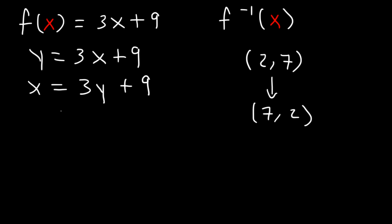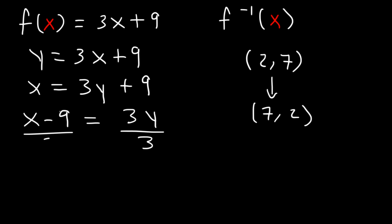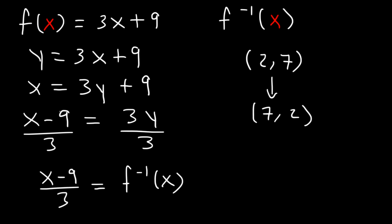Get y by itself. We need to subtract both sides by 9 first. And then to isolate y, we need to divide by 3. So the inverse function is x minus 9 over 3. That's how you can find it.